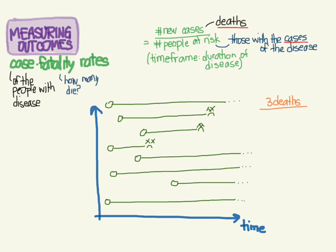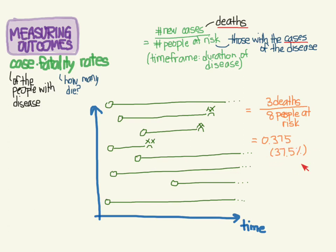How many people were at risk of dying from this cancer? All of the people shown — one, two, three, four, five, six, seven, eight. So eight people at risk. Three deaths over eight works out to three-eighths, which is 0.375 or 37.5%. That's how we measure the case fatality rate, which is a special case of incidence.